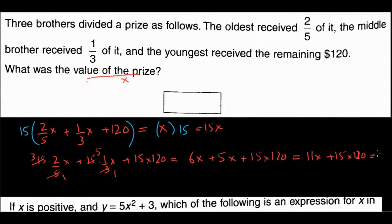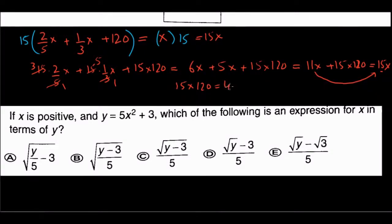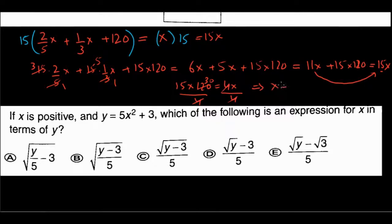Moving 11x to the right side gives 15 times 120 equals 4x. Dividing both sides by 4: x equals 15 times 30, which is 450. So the value of the prize was 450.